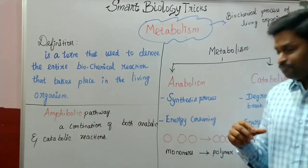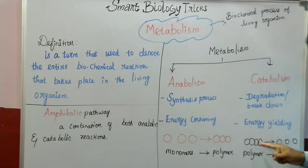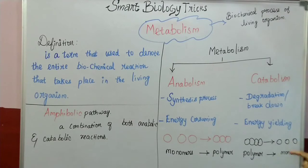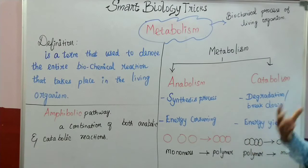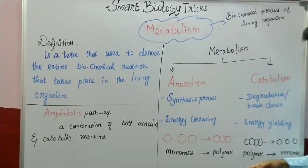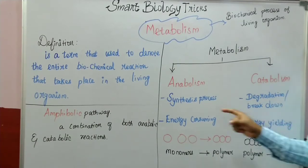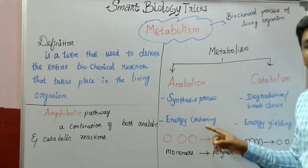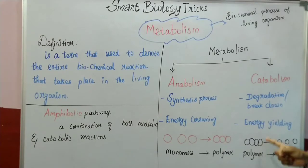In catabolism, large polymers are broken down to form individual monomers. During this process, energy is being created — so catabolism is an energy-yielding process. In contrast, anabolism is an energy-consuming process where energy is utilized, while in catabolism energy is produced.